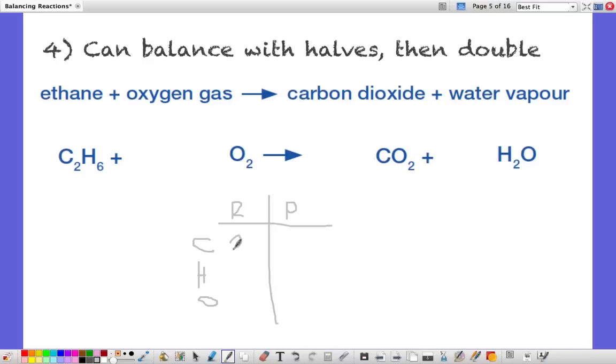We've got two carbons on the left and only one on the right so let's fix that. Hydrogens, we've got six on the left and only two on the right so let's fix that. We're going to multiply that by three. So two there and six there.